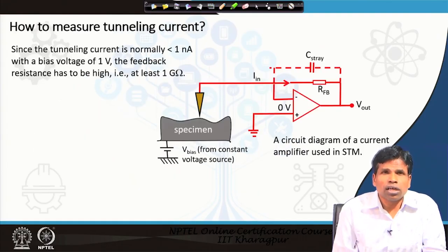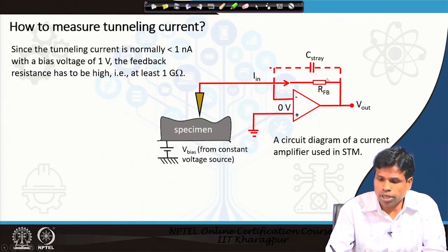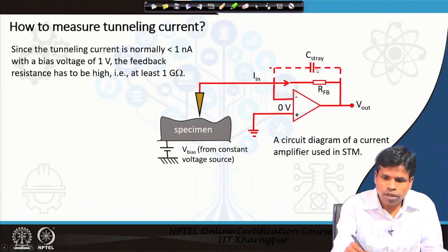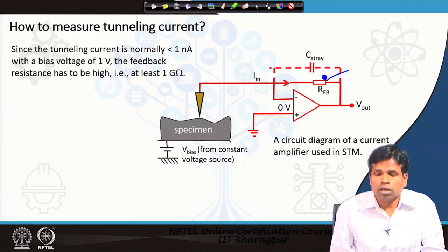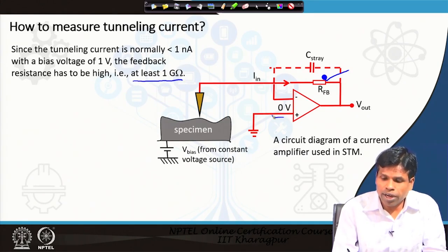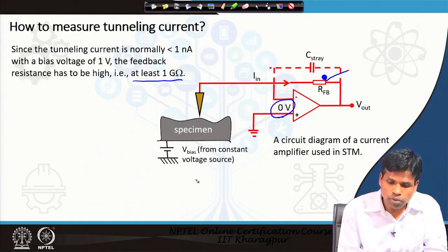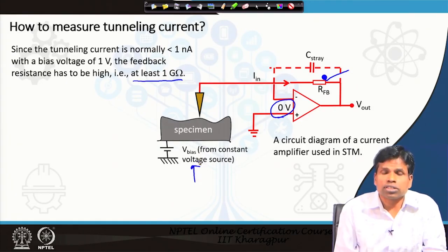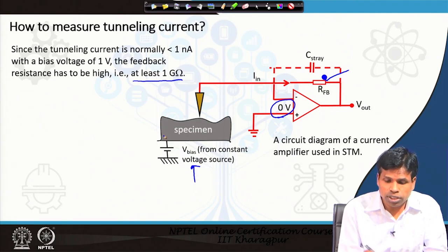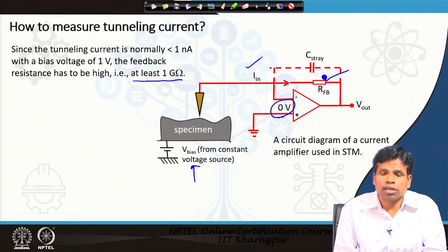To measure the tunneling current — which is in the pico ampere to nano ampere range — with a bias voltage of less than 1 volt, we normally use a high feedback resistance of at least 1 gigaohm. The tip is normally biased to 0 volt or grounded, while the bias voltage is provided to the sample from a constant voltage source — either less than 0 volt or greater than 0 volt — and then we measure the tunneling current generated between tip and sample.